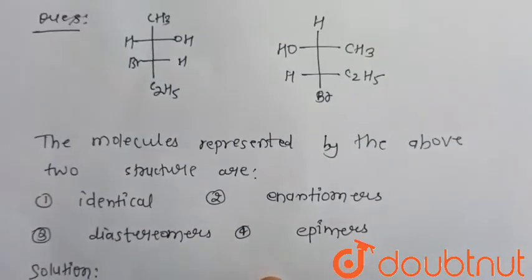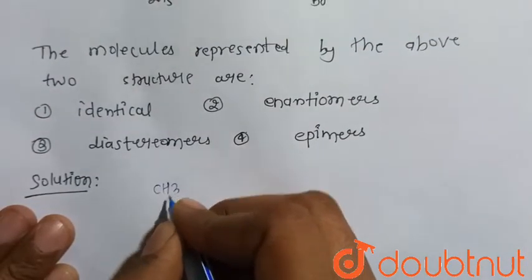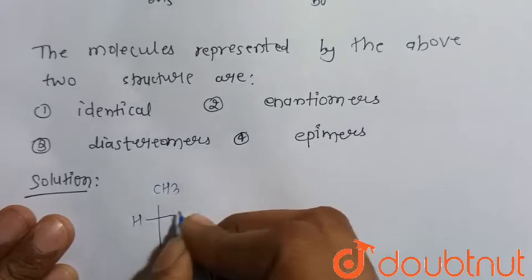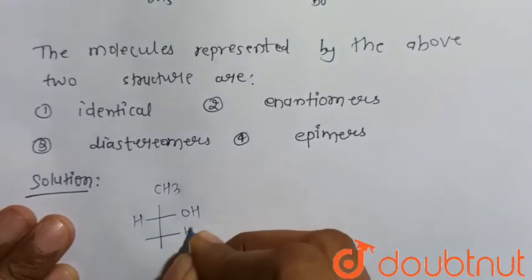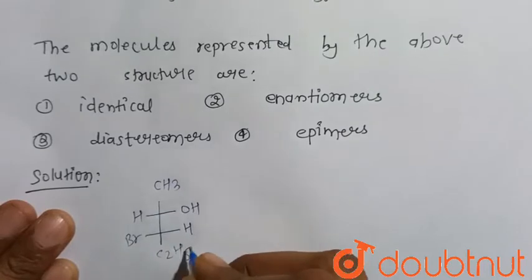Consider the given compound. The first compound is CH3. They are present in the Fischer projection form H, Br, C2H5.